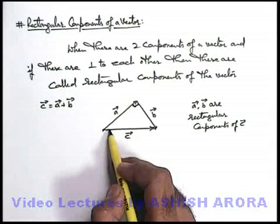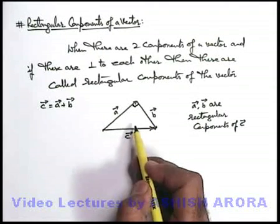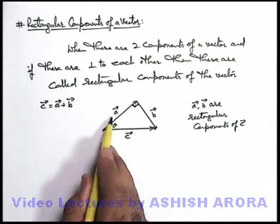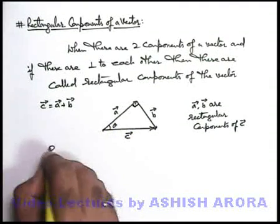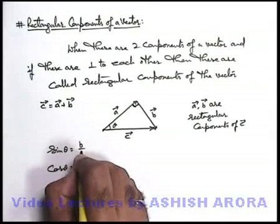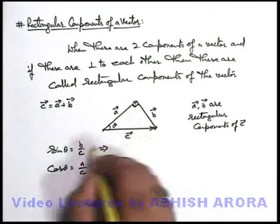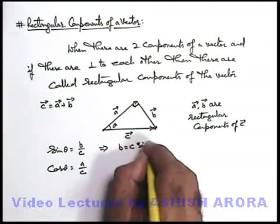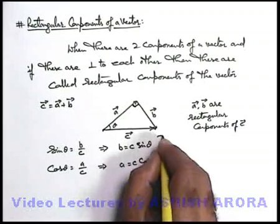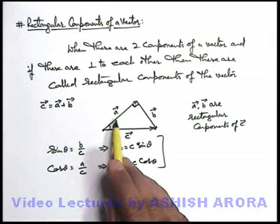We can relate the magnitudes of the three vectors, or find out the magnitude of components in terms of the resultant vector. If the angle theta is the angle made by the resultant vector with vector a, then in this right angle triangle we can find two trigonometric ratios: sine theta equals b by c, and cosine theta equals a by c. That means one rectangular component on the opposite side of theta, b, can be written as c·sine theta, and the other rectangular component on the adjacent side, a, can be written as c·cosine theta.